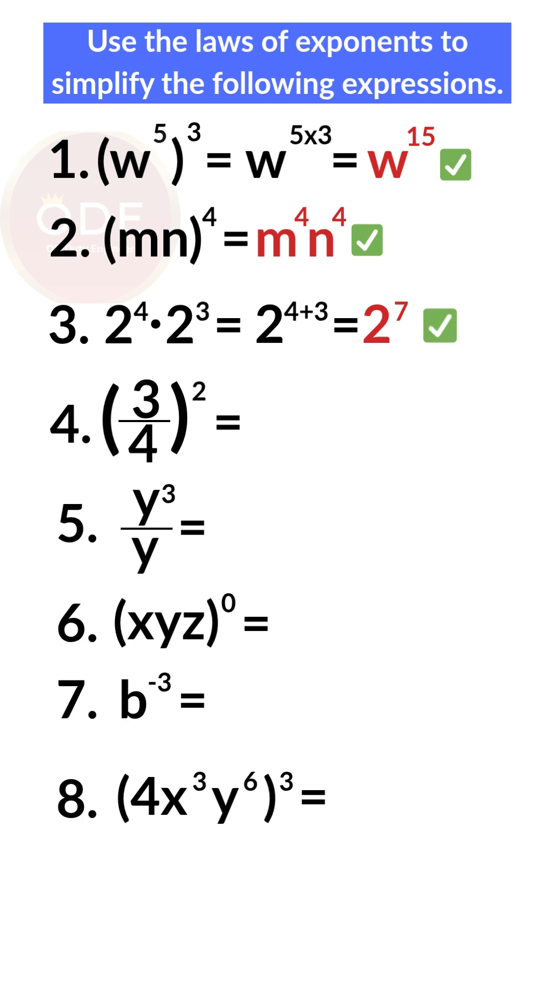Number 4: 3 fourths squared equals 3 squared over 4 squared, which equals 9 over 16.